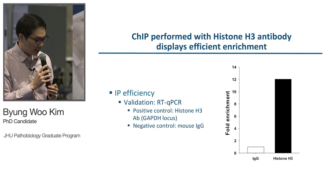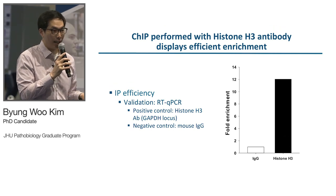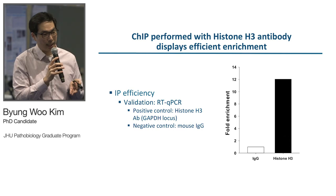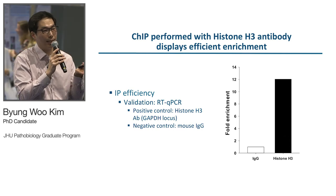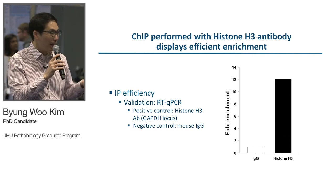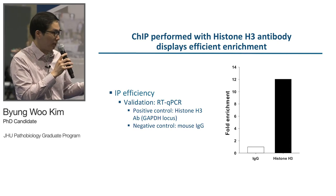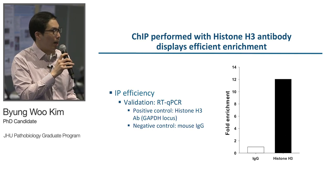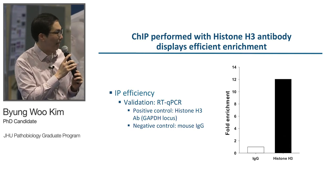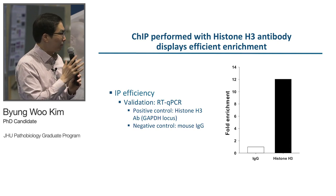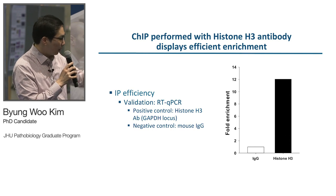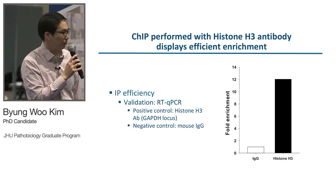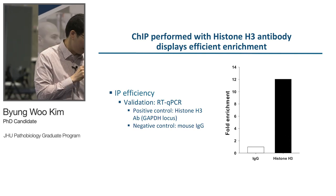It is always good to check IP efficiency, which you can do using RT-qPCR. In this case, it's not possible to check SOD1 binding sites directly since we don't know them yet. So we used histone H3 antibody as a positive control, as histone H3 is a chromatin-binding protein with well-known binding sites — one of which is the promoter region of GAPDH. We used mouse IgG as a negative control. The fold enrichment graph shows that samples pulled down by histone H3 have about 12 times more fold enrichment compared to IgG pulldown, confirming good IP efficiency.